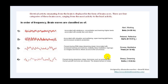Electrical activity emanating from the brain is displayed in the form of brain waves. There are four categories ranging from the most activity to the least activity. In order of frequency, the first type is called beta brain waves, ranging from 14 to 30 hertz per second, noticed during alert and working states. It is associated with alertness, concentration, and learning. Higher levels are associated with anxiety, fear, and stress.